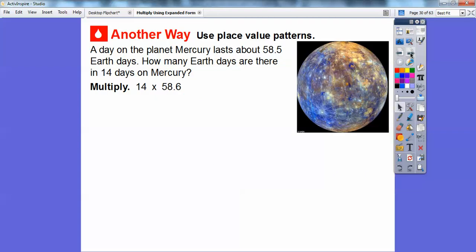So let's try another one. We're going to use place value patterns on this problem here. A day on the planet Mercury lasts about 58.5 Earth days. So how many Earth days are there in 14 days on Mercury? So we're going to do place value patterns to multiply 14 times 58.6.